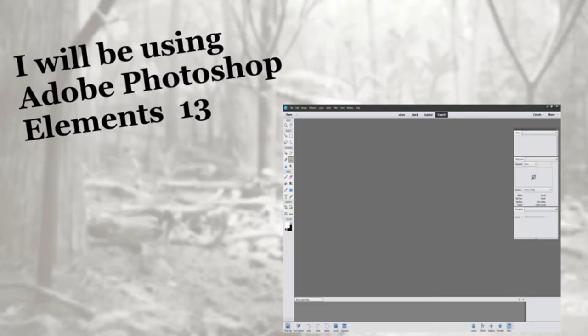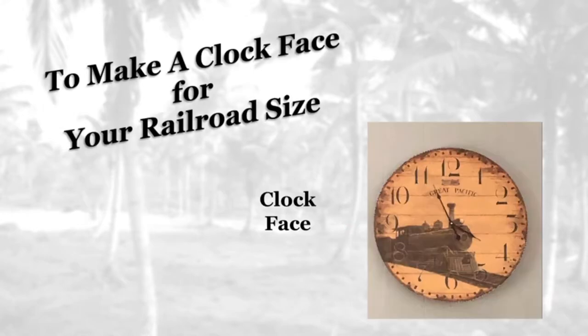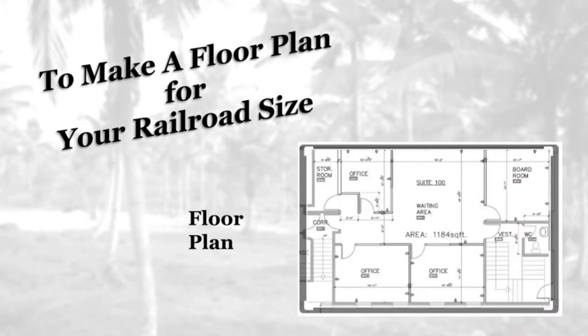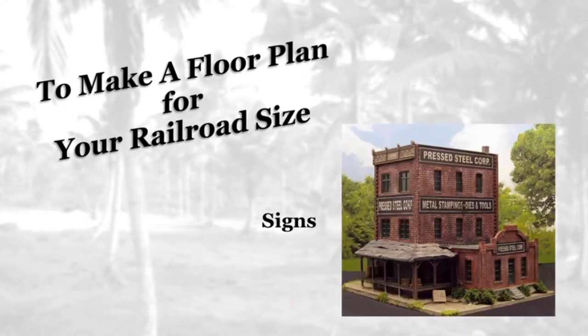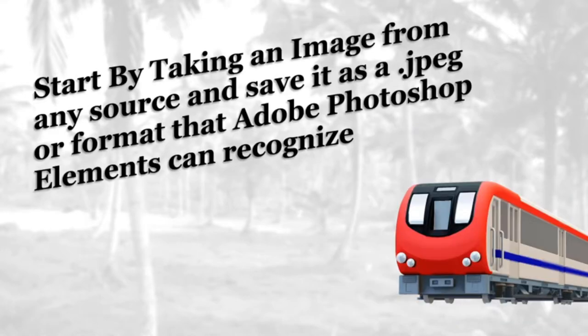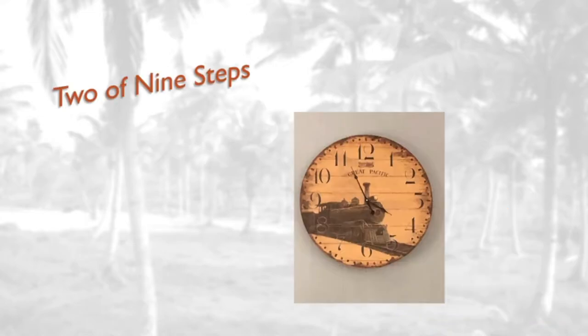When you open up Adobe Photoshop Elements 13, this is what you should be looking at. I'm going to cover my step-by-step technique that I use for my model train layout. This technique can be used for a clock face, a floor plan, a structure, or making a bridge — also signs on buildings. I always have an image saved as a JPEG, and that's what I like to use in this project. We're going to be using a clock face that I had on my man cave wall. Step one was finding an image in JPEG format.